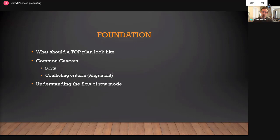To get into it, we need to talk about a couple of mechanics first, and I'm going to start off with some simple examples. A lot of this about taking large operations and making them into something more bite-sized comes back to using the TOP operator, but getting things lined up so that we can have the performance we expect. We're going to talk about what a TOP plan should look like, go through some common caveats — sorts and conflicting criteria — and talk a bit about how normal queries operate.